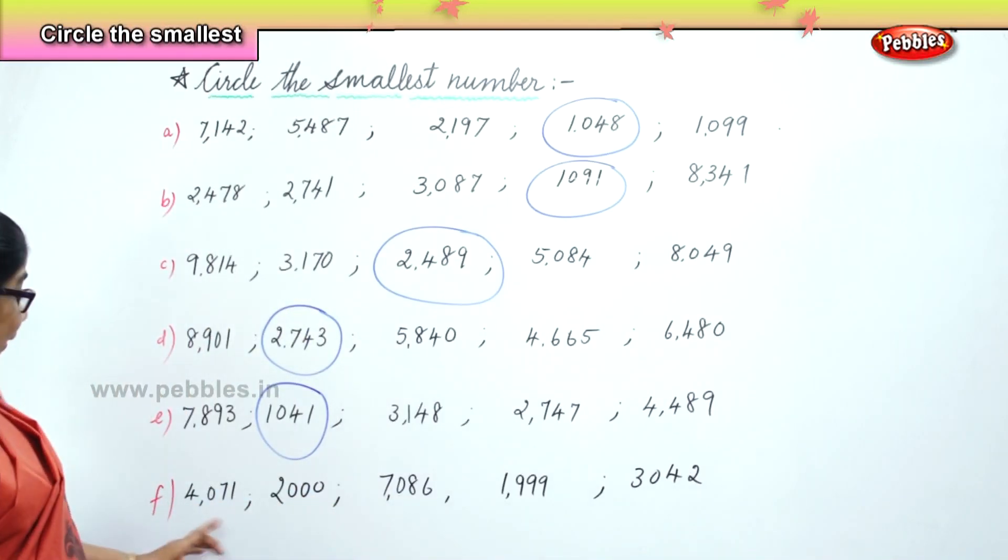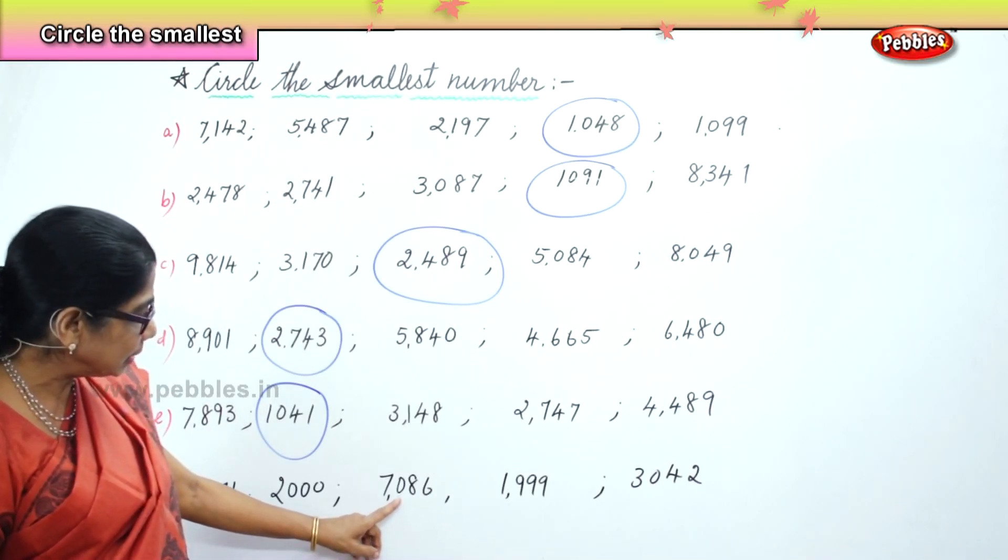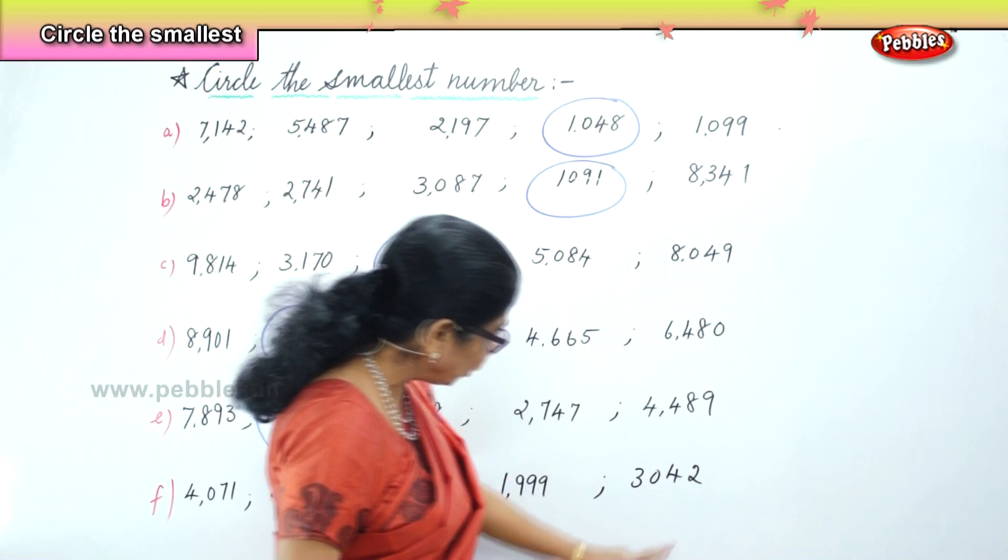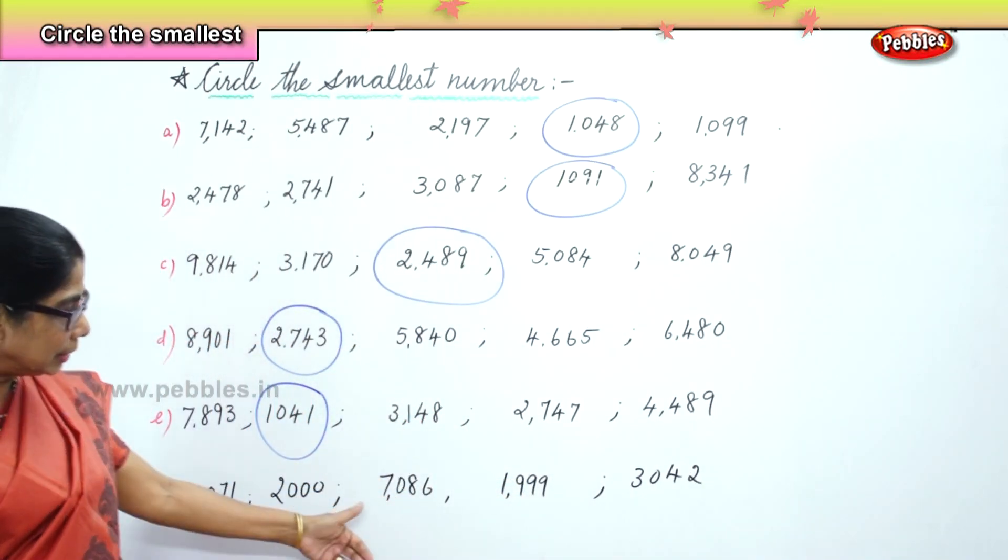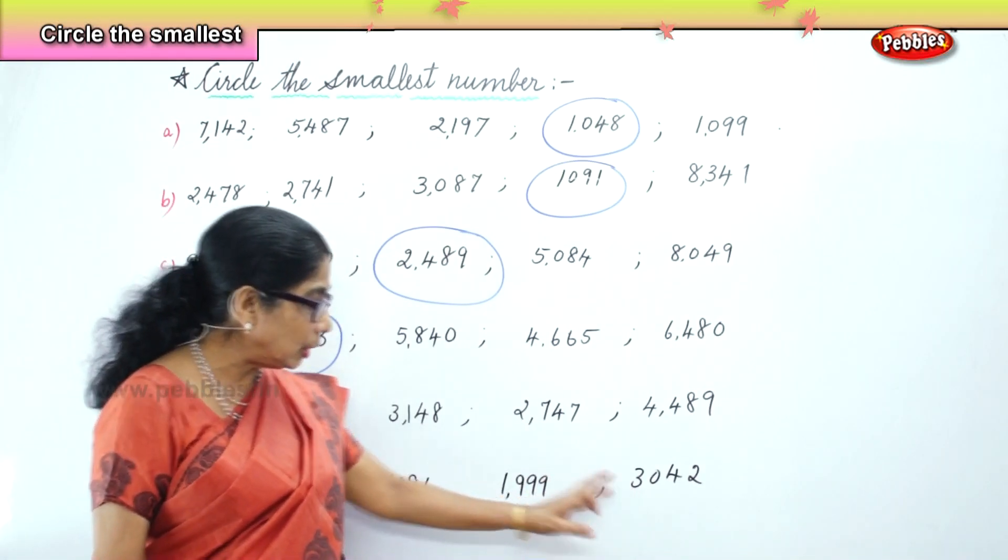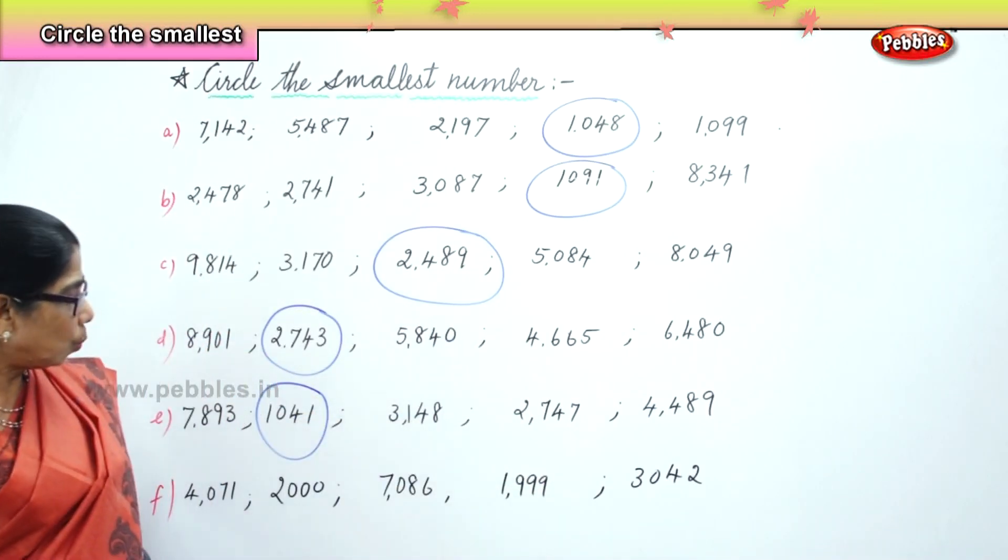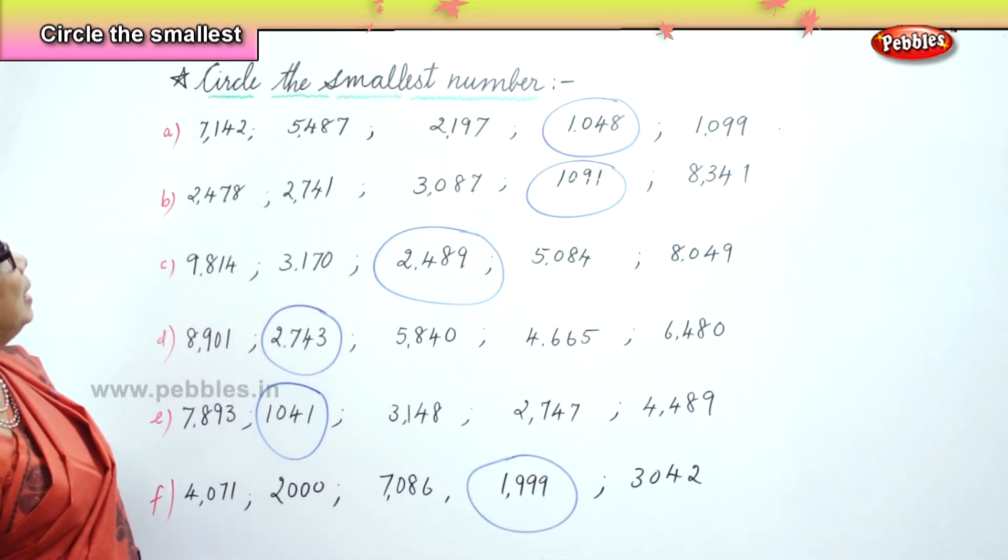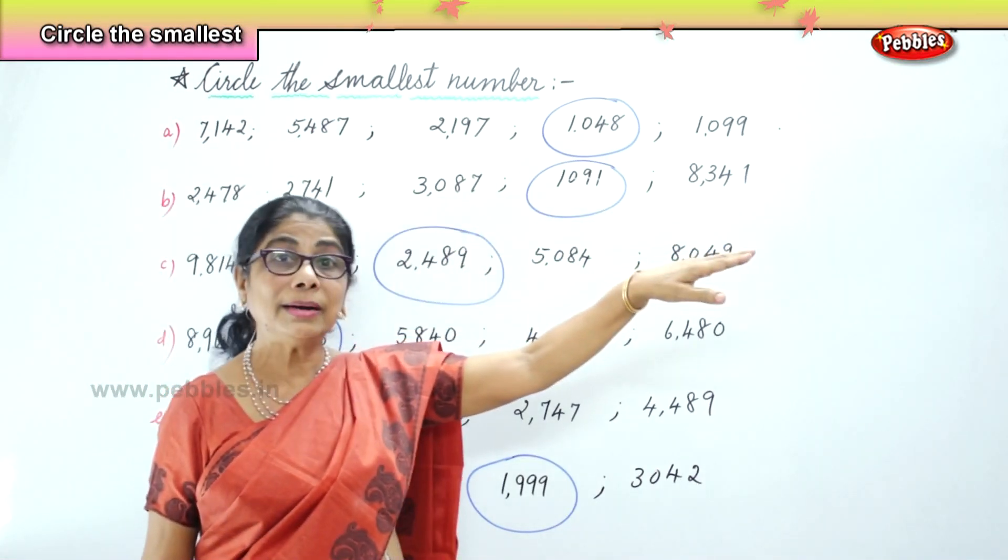Let's choose the smallest among these: 4,071, 2,000, 7,086, 1,999, 3,042. So you have 5 sets of numbers. This is 4,000, 2,000, 7,000, 1,000, 3,000. So the smallest number among this is 1,999, the smallest of the five numbers. Today we learned to identify and circle the smallest number in each row.